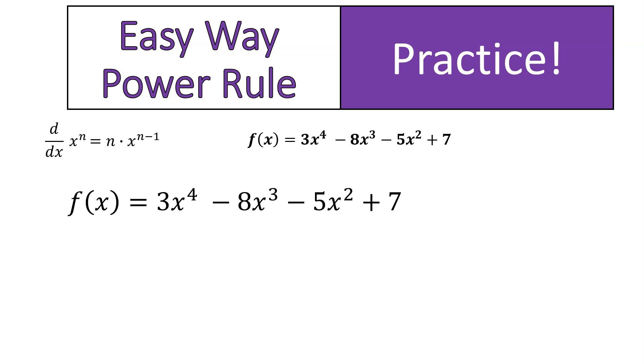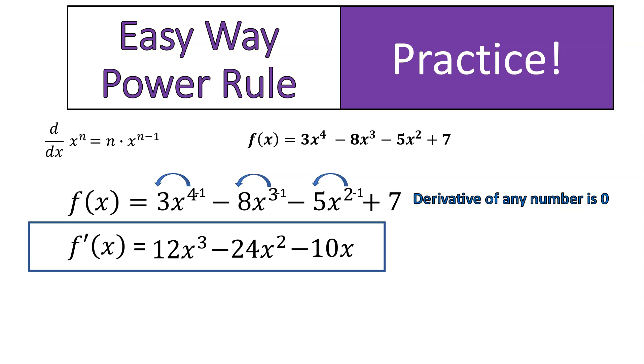Hey, welcome back. Here we go. We're going to find the derivative. Multiply 4 times 3. That gives us 12x to the power of 3. Then we do 3 times 8, which is 24. We keep our sign, so it would be negative 24x to the power of 2. Then in our third term, we multiply 2 times 5 and reduce our exponent by 1, giving us negative 10x. The 7 is a number, so we're not even going to worry about it. Derivative of any number is 0. And boom, that's our final answer. That's the easy way to do it.